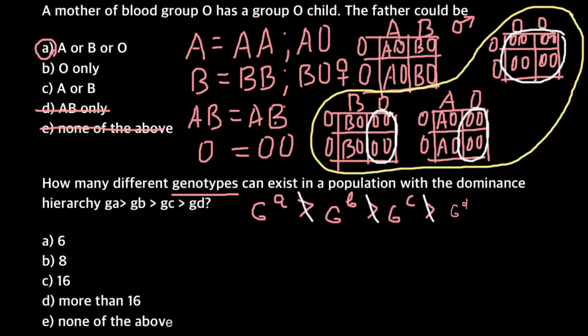Because we are talking about genotypes, this dominance hierarchy doesn't make sense, so we can cross it out. What these letters GA, GB, GC, and GD mean is that we have the same gene but different versions of it — we call them alleles. So we can rewrite this hierarchy simply as four alleles: A, B, C, and D.